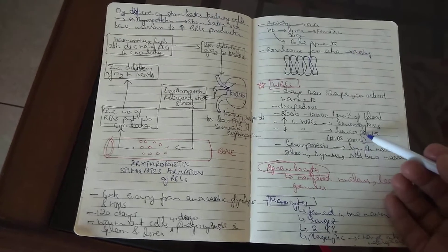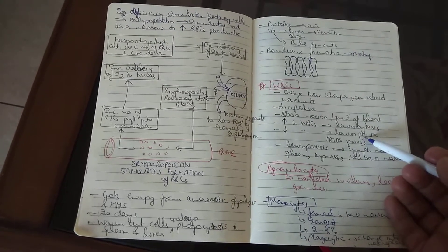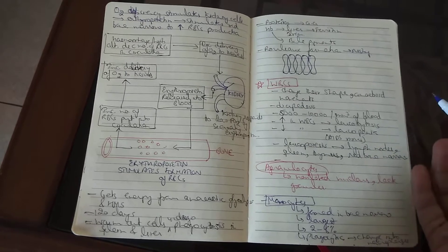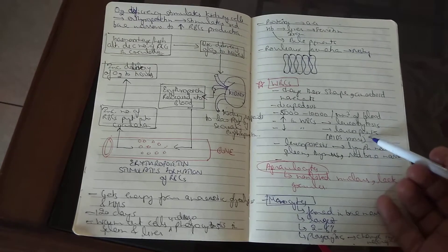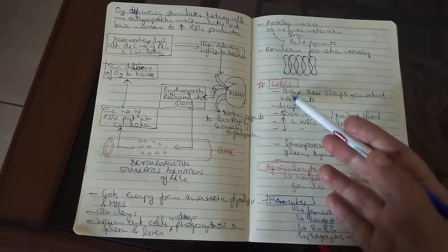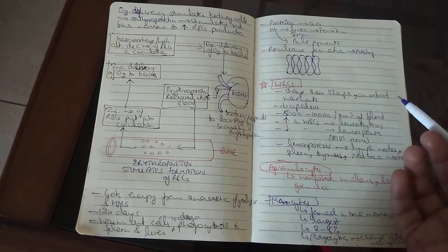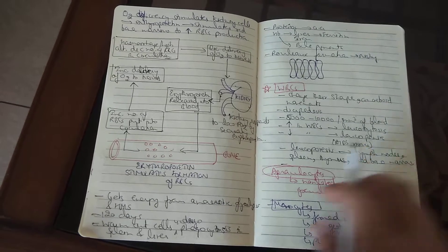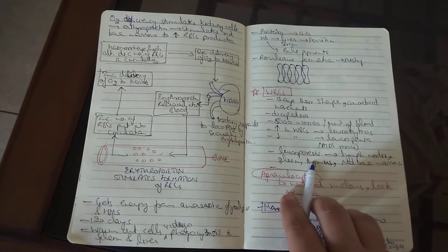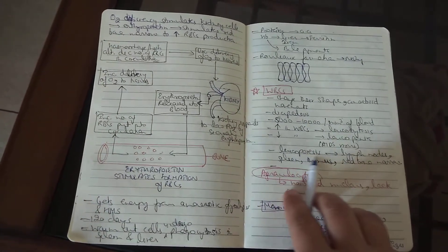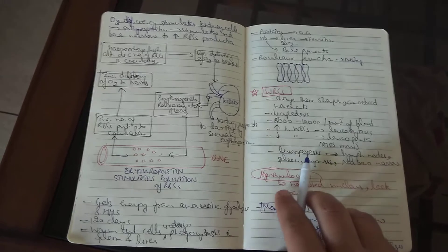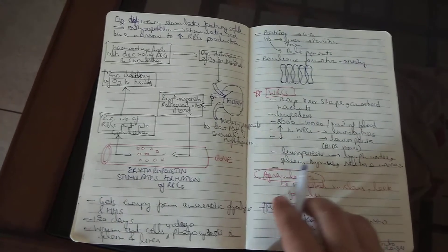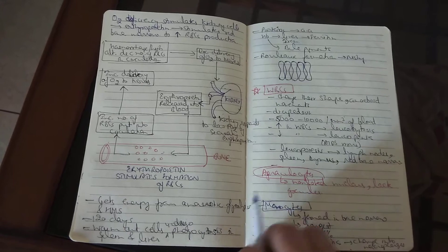Decrease in the number of WBCs, leukopenia, occurs in AIDS virus. WBCs are also referred to as white blood corpuscles, white blood cells, or leukocytes. Leukopoiesis occurs in the hemopoietic organs, which are the lymph nodes, spleen, thymus, and red bone marrow.